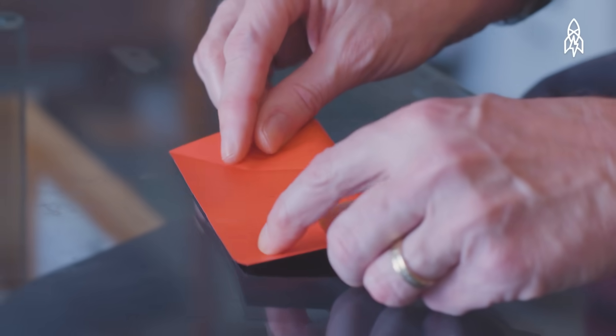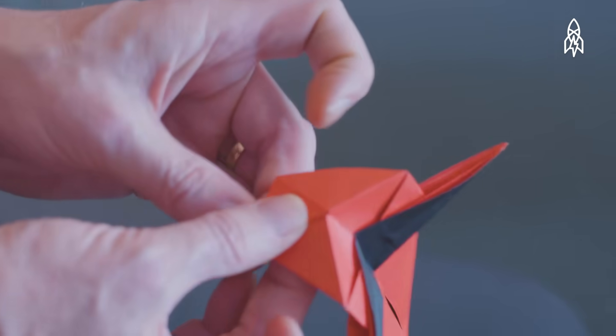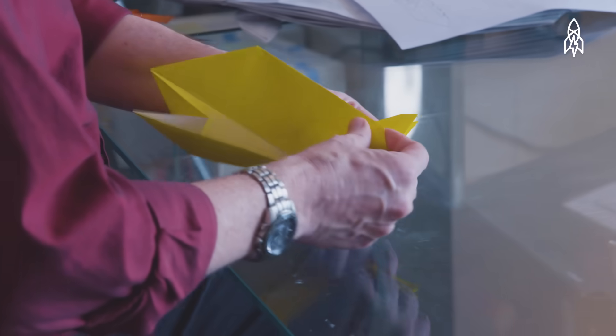Traditional origami was relatively simple. The designs would have taken maybe 20 or 30 steps at most but today origami pieces can be so complicated that they can have tens, hundreds, maybe even a thousand steps.